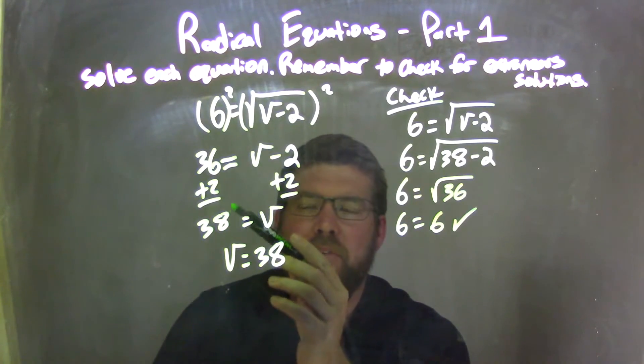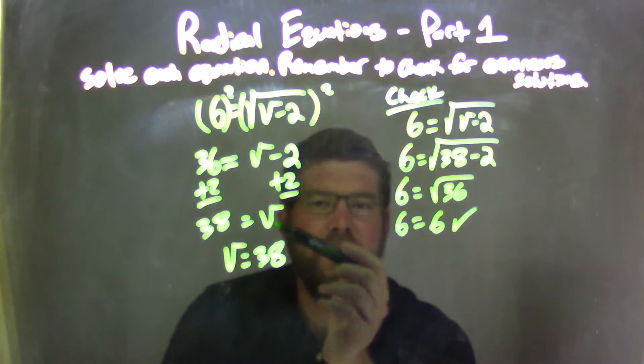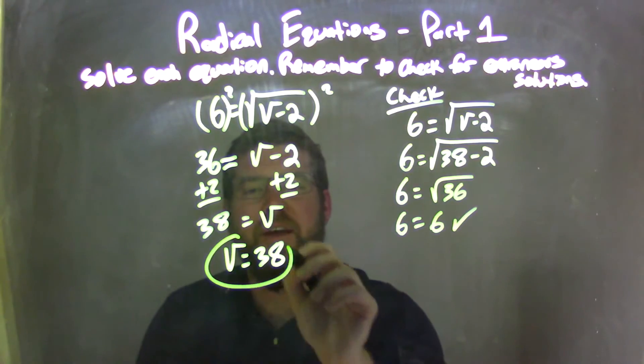Now 36 plus 2 is 38. And that equals just my v. Rewrote it to have v equals 38. Looked nice and neat.